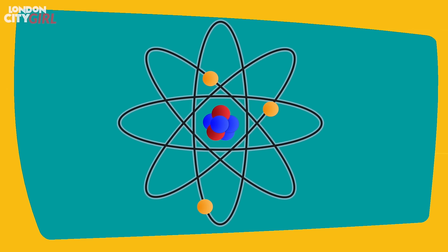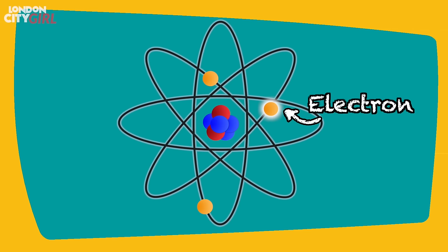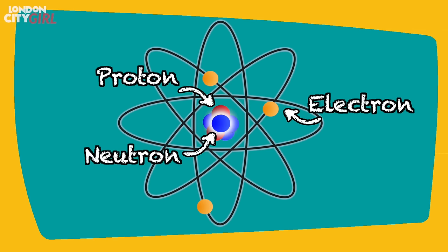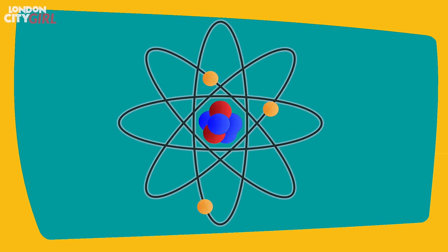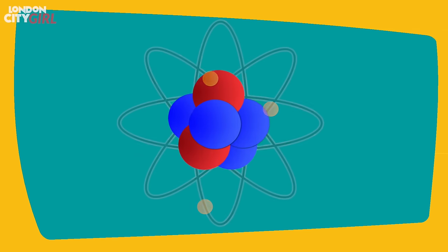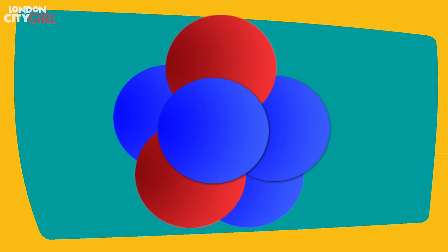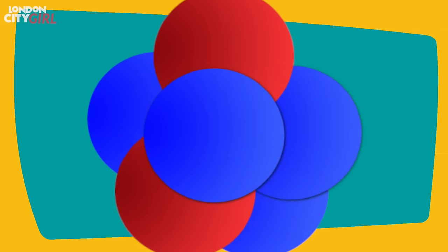What is a particle? One of the particles you will be most familiar with will be the electron. These orbit the nucleus of atoms and the nucleus is made up of two other particles, protons and neutrons. The electron is an elementary particle, one of the fundamental constituents of the universe. Scientists have found that protons and neutrons are made up of other particles called quarks.